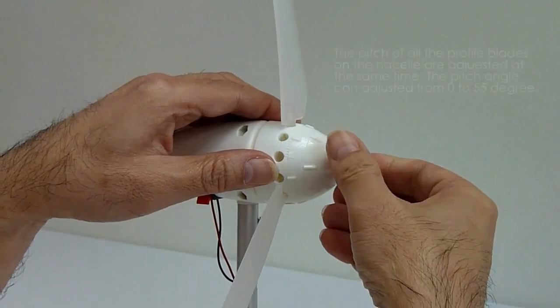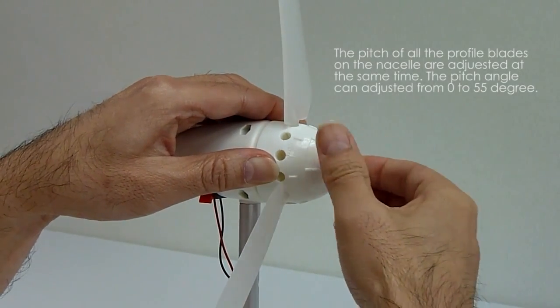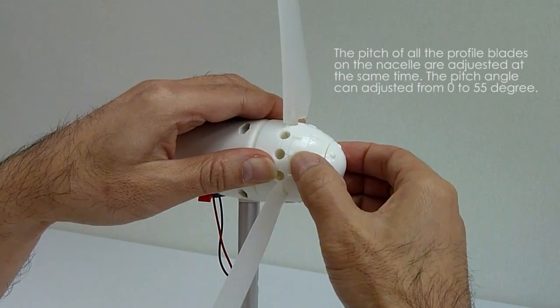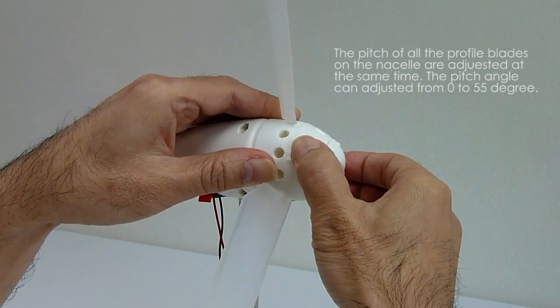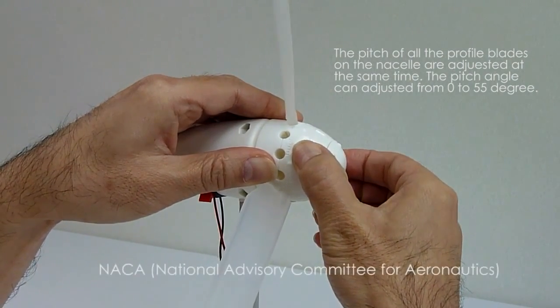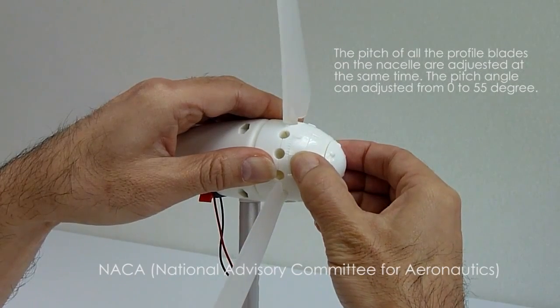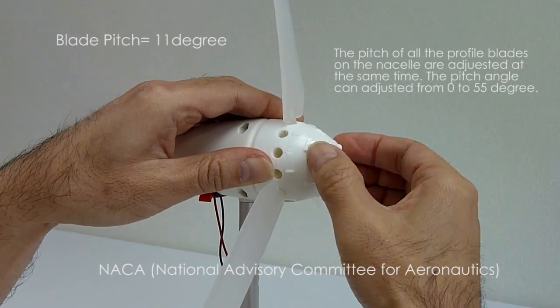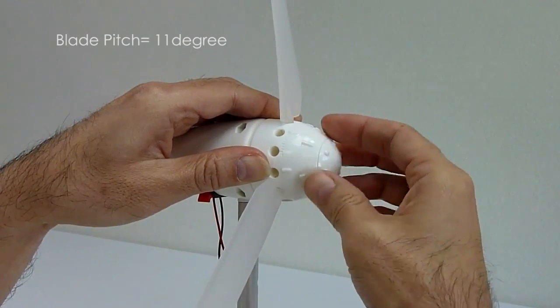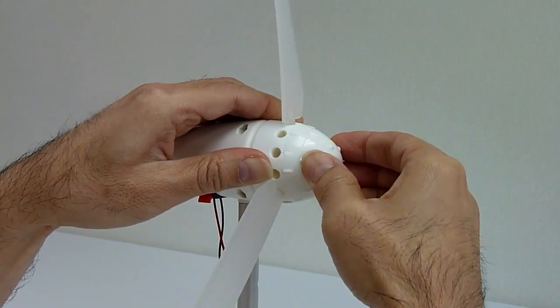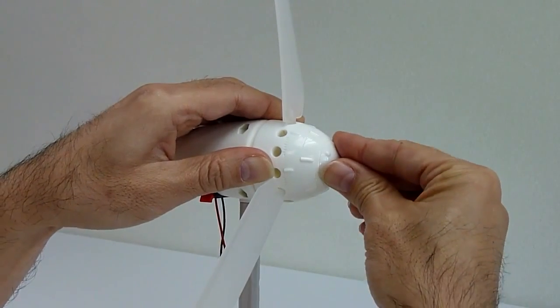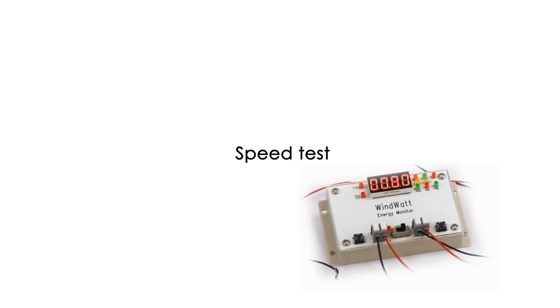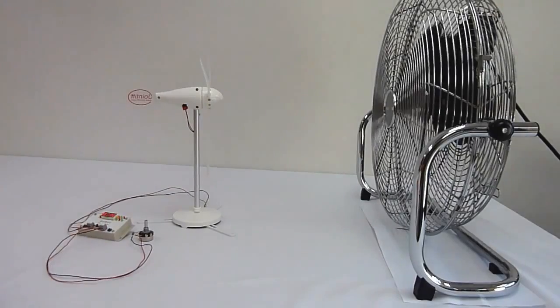Now let us see how powerful this turbine is. We use three pieces of the profile blade with the same specification as NACA No. 44 and set the pitch angle to 11 degrees for our setup. We use an energy monitor to measure the various electrical parameters of the setup. Yawing of the turbine is disabled.